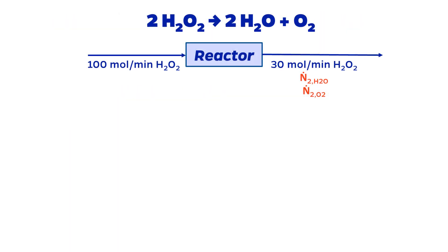Let's look at a short example problem. Suppose that 100 moles per minute of H2O2 goes into a reactor and 30 moles per minute of H2O2 comes out of the reactor. Clearly some of the H2O2 has reacted so there will also be reaction products water and oxygen in the exit stream.